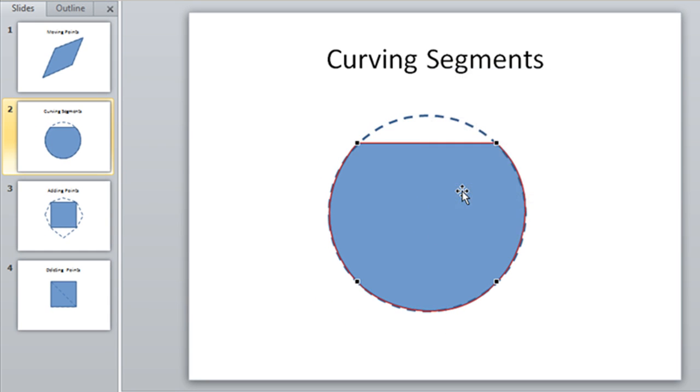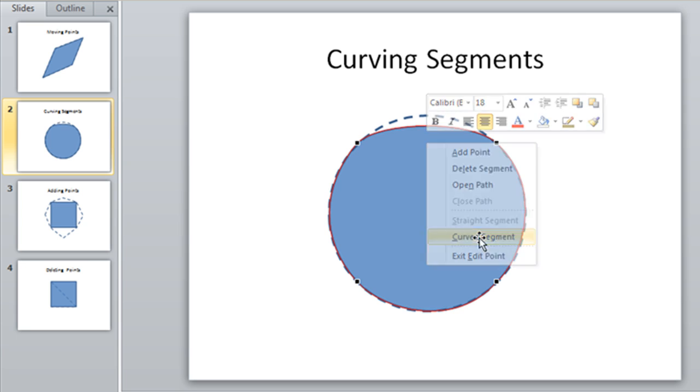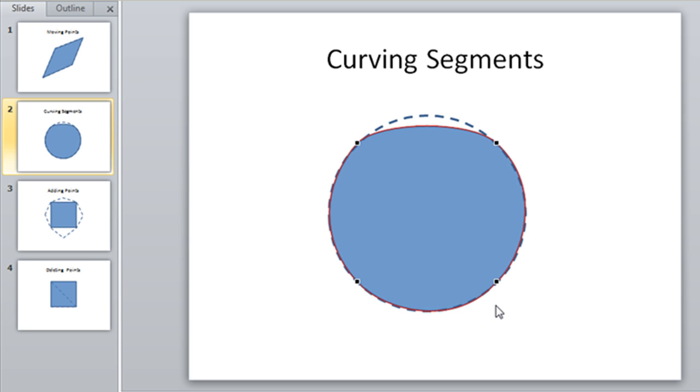Choosing that option will remove any curves and just make a straight line between the two points that exist on either side of that segment. Likewise, if you have a straight segment, you can hover your mouse right over the segment, right-click and choose the option Curved Segment. That will lightly curve that segment between the two points. So many ways to curve a segment manually or by right-clicking and choosing Curved Segment.